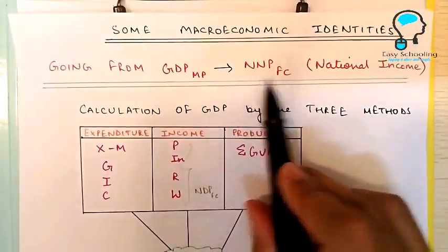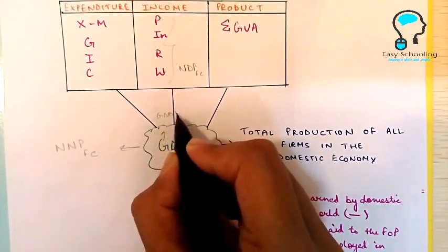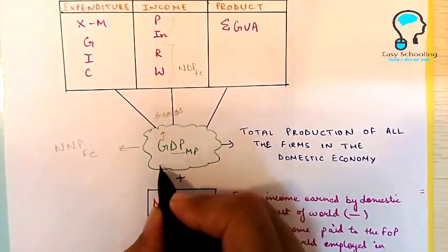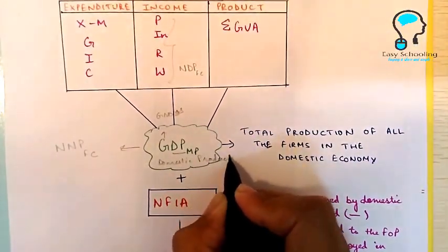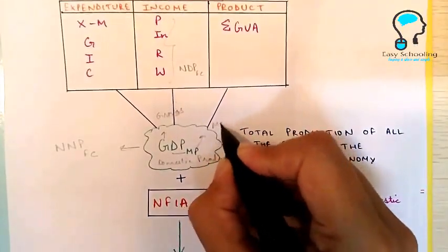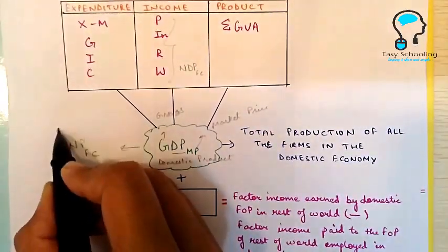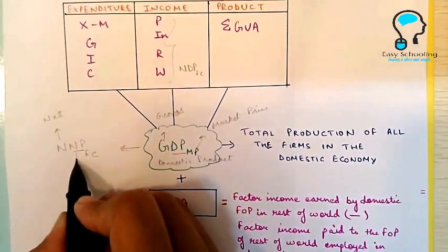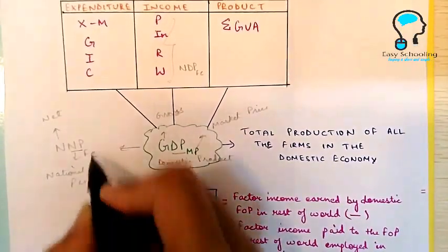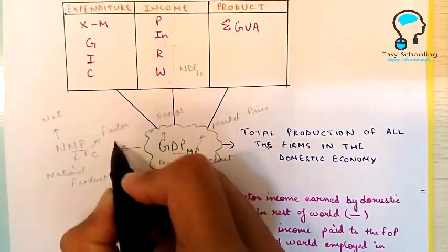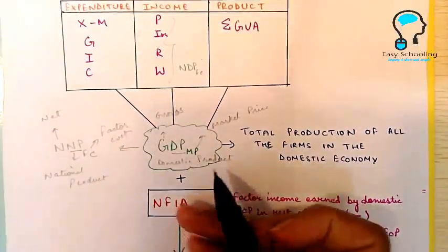Now understand what these terms actually are. G means gross, DP is domestic product, and MP is market price. Here N means net, NP is national product, and FC is factor cost. Now this is what you need to change.